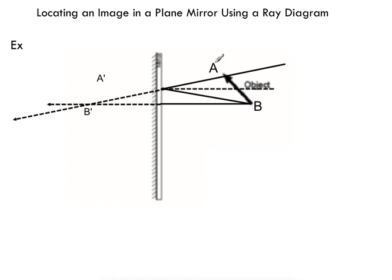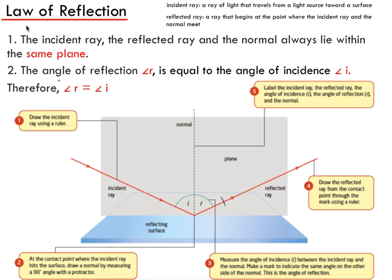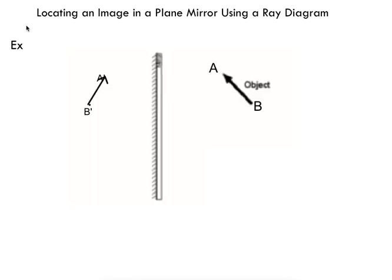It's not really surprising that these points exist on the other side of the mirror — when you look in a mirror, it's as if you're seeing the image on the other side. Connect B prime to A prime to draw the image object. It should be an exact duplicate of the original object: the same size, the same distance from the mirror, only laterally inverted from left to right. This is how you locate an image in a plane mirror using a ray diagram. Thanks for watching.